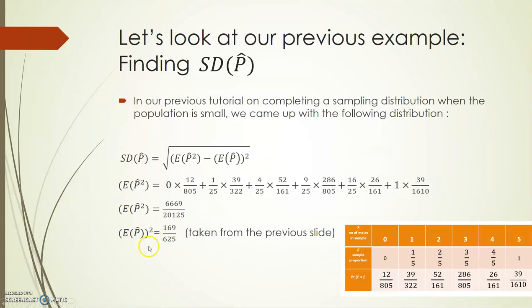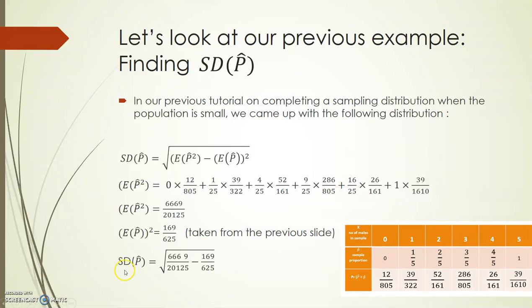The second thing I need to do is to square the expected value of p-hat. This was found on the previous slide — it was 13/25. When I square the expected value of p-hat, I get 169/625. I substitute both of these values into my formula, so the standard deviation of p-hat is equal to the square root of 6,669/20,125 minus 169/625. This gives an approximate value of 0.2469, to four decimal places.